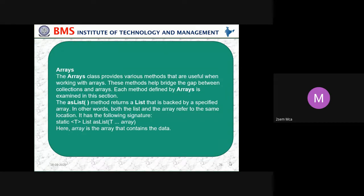Static Collection returns a runtime type-safe view of a collection; an attempt to insert an incompatible element causes a ClassCastException. The Arrays class provides various methods useful when working with arrays, helping bridge the gap between collections and arrays. The asList method returns a list backed by a specified array — both the list and the array refer to the same location, with signature static <T> List<T> asList.